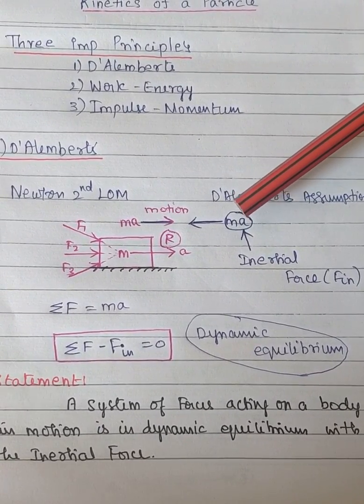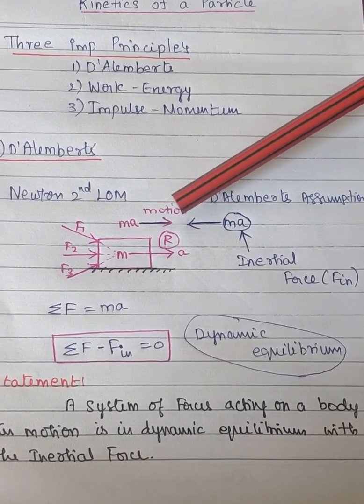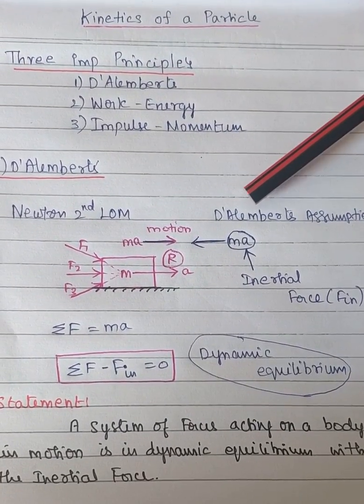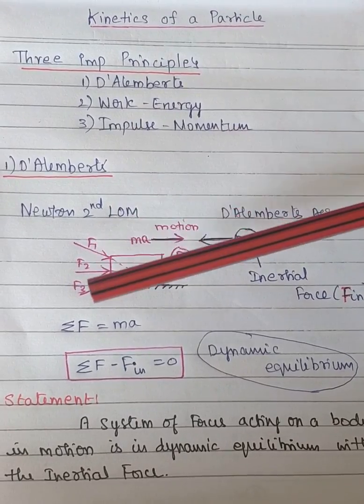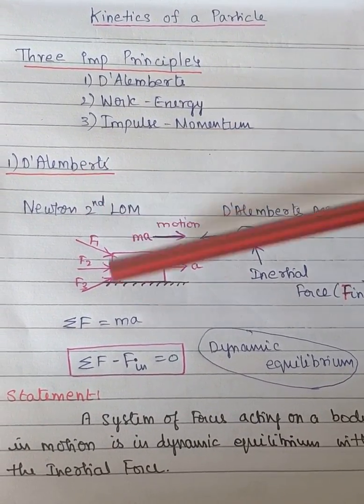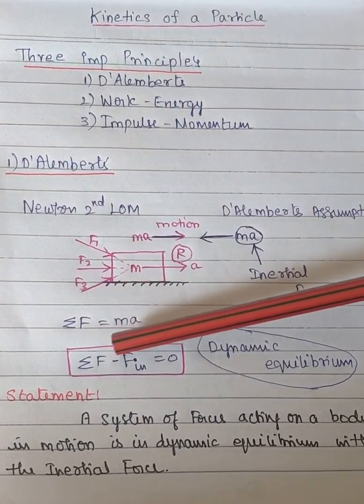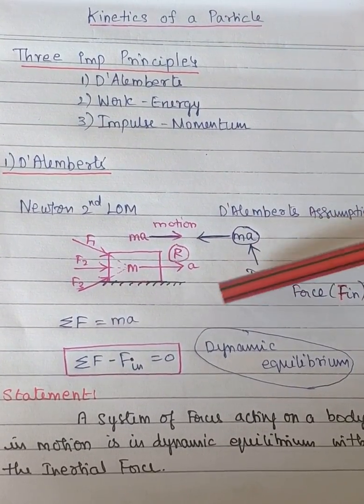At the equilibrium state, the sum of the forces which is responsible for the motion minus this inertial force is equal to zero, and D'Alembert calls this dynamic equilibrium.